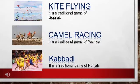Here you can see some examples of traditional games. First is kite flying — it is a traditional game of Gujarat. Second is camel racing — it is a traditional game of Pushkar. Third is Kabaddi — as you all know, it is a traditional game of Punjab.